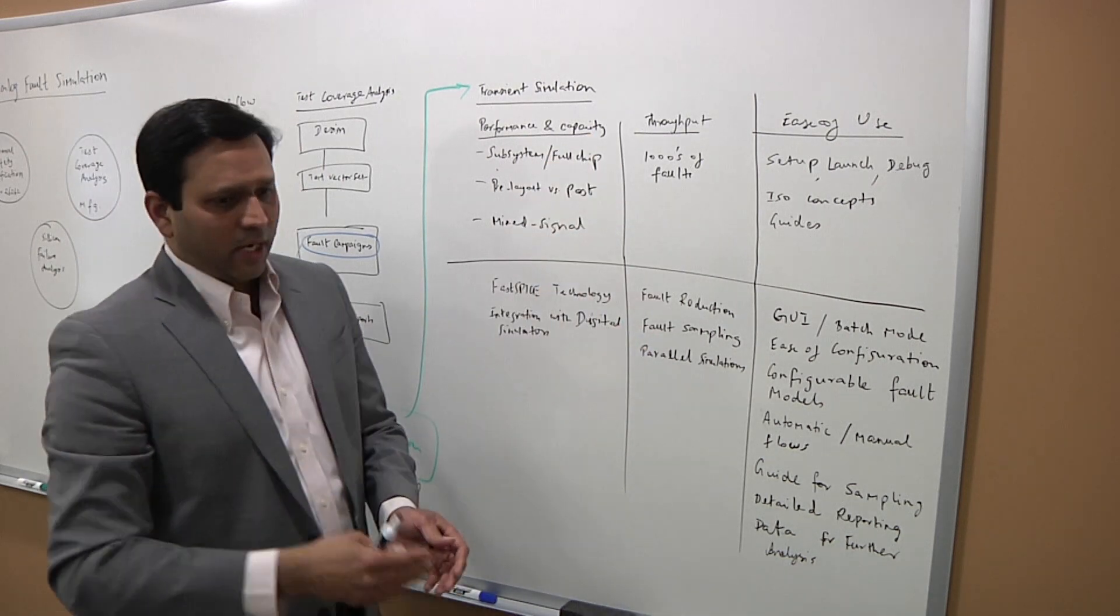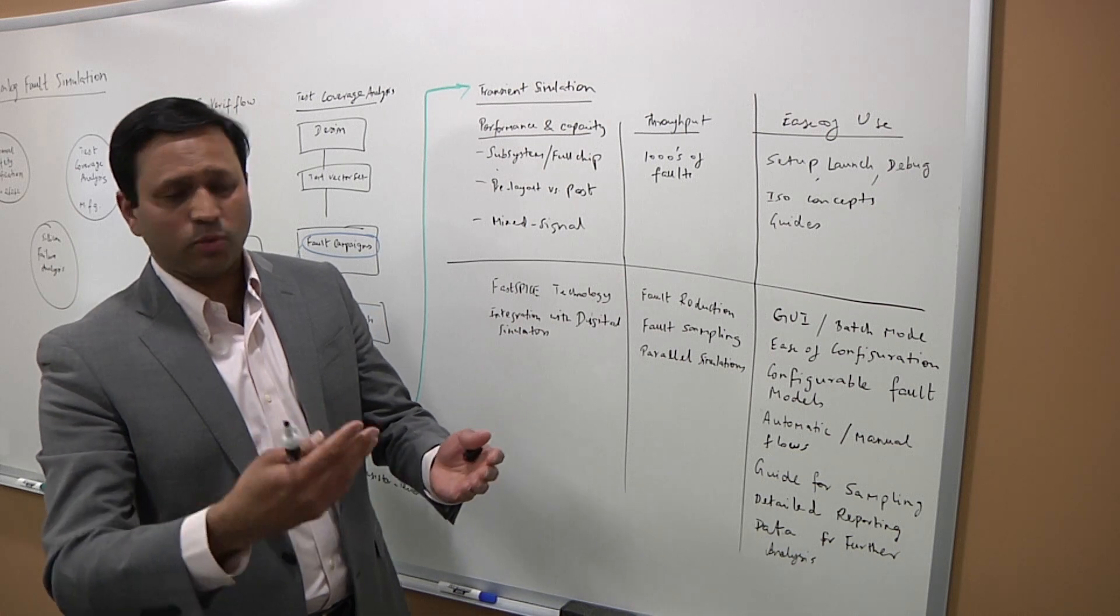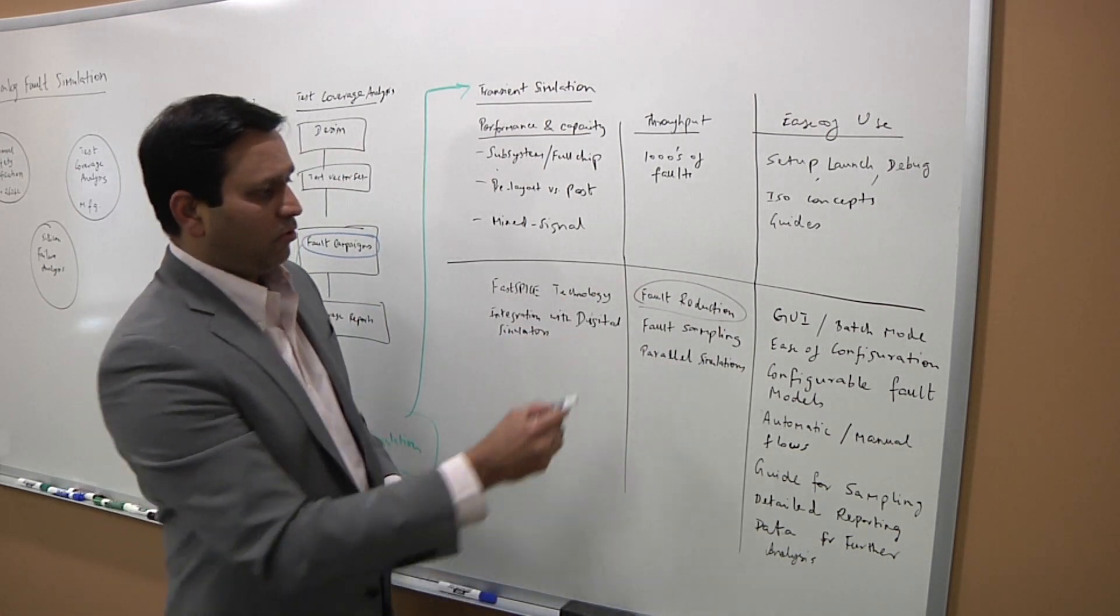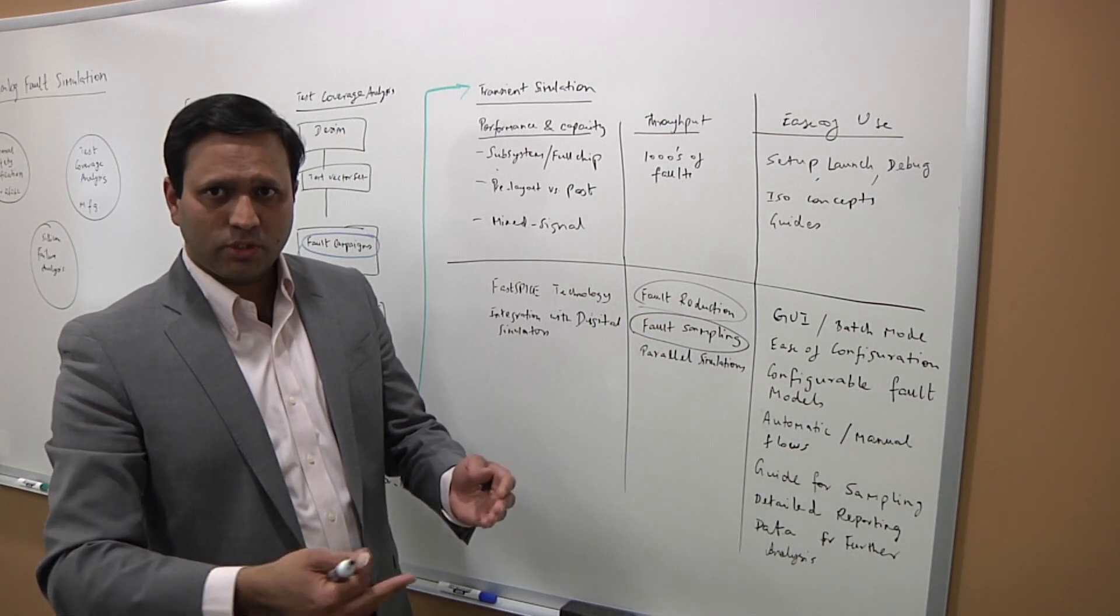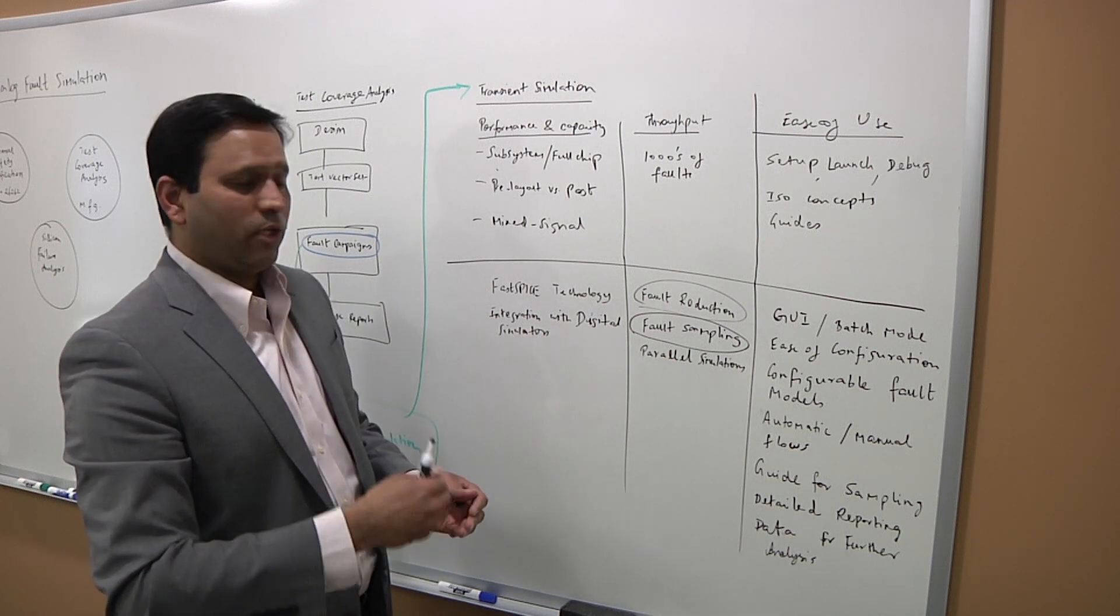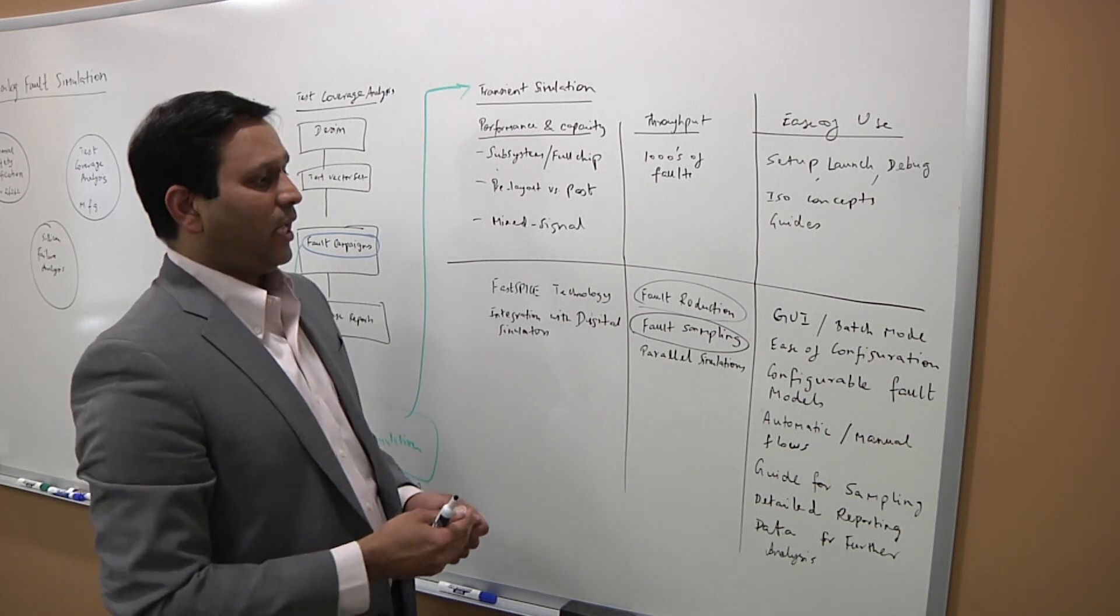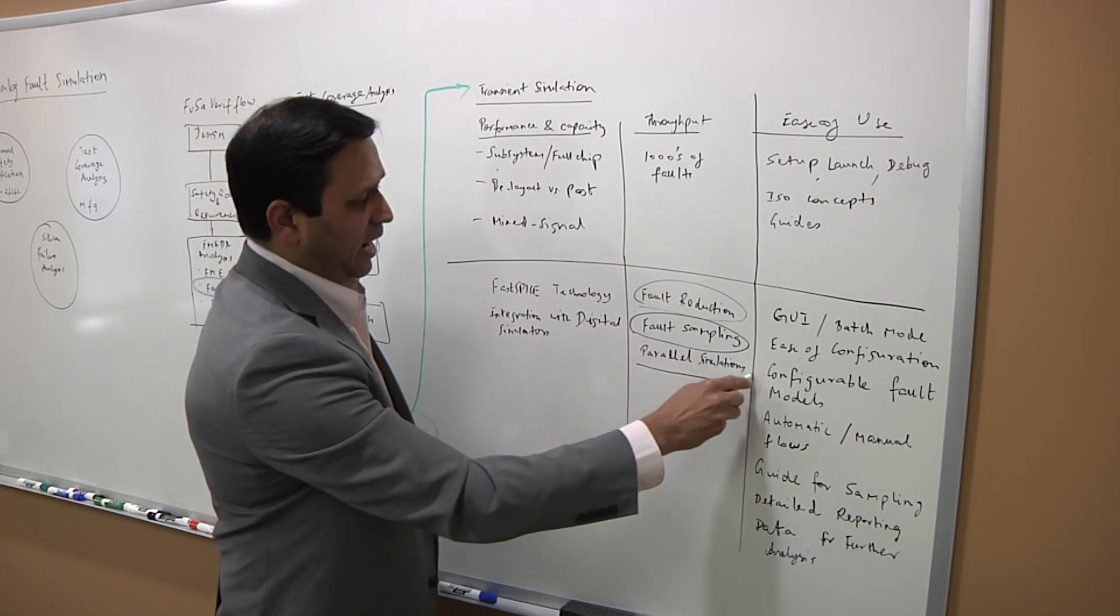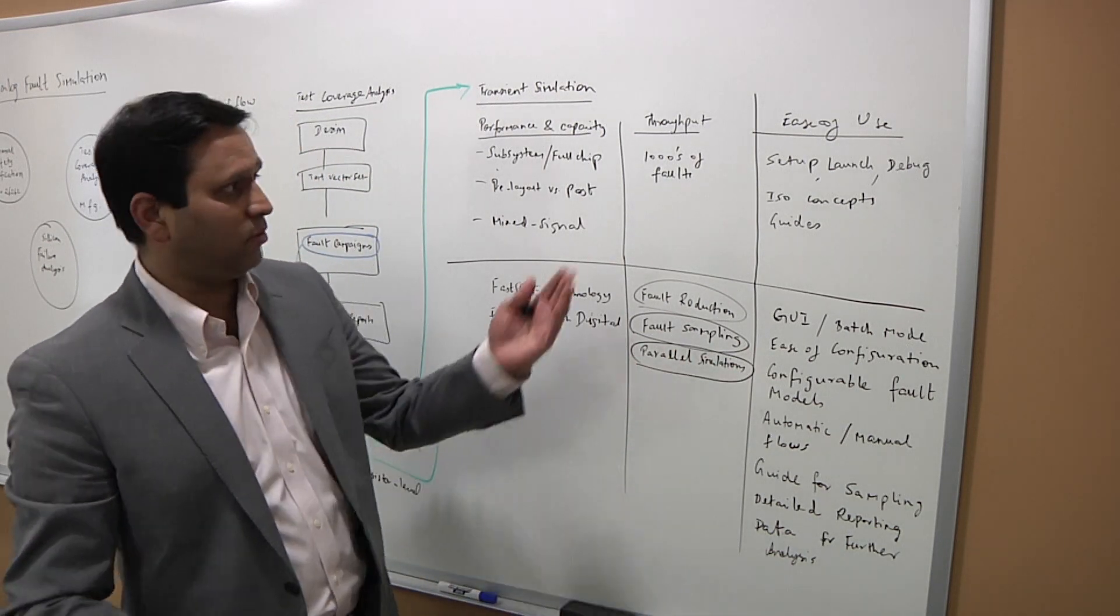When it comes to throughput, there are many techniques by which you can reduce the number of fault simulations you need to do. That is the basic fault reduction. There is also fault sampling where given a universe of faults, you can select a subset of those faults and use that for simulation for a certain target coverage. But how do you do that is where the secret sauce is. And that I think is an important requirement. And then, of course, finally parallel simulations will also help you because it's just running simulations in parallel for better throughput.